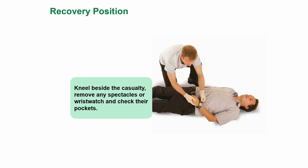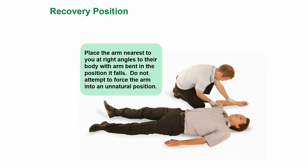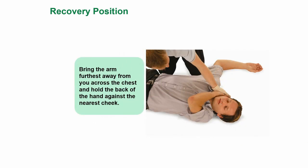This is how you put a person into the recovery position. They should be breathing normally — they might well be unconscious, but as long as they're breathing normally, we need to put them in a position where, if they are sick, they don't choke on their own vomit. First, kneel beside the casualty, remove any spectacles or wristwatch, and check their pockets. Place the arm nearest to you at right angles to their body with their arm bent in the position it falls — do not attempt to force the arm into an unnatural position. Then bring the arm furthest away from you across the chest and hold the back of the hand against the nearest cheek.